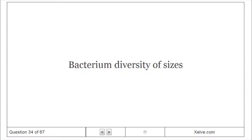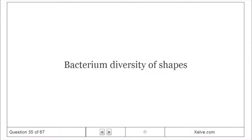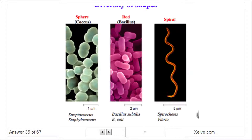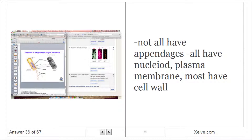Bacteria are small, but size alone is not a good way to distinguish prokaryotes from eukaryotes. Bacteria display a diversity of sizes and shapes. The structure of a typical rod-shaped bacterium: not all have appendages, but all have a nucleoid and plasma membrane, and most have a cell wall.